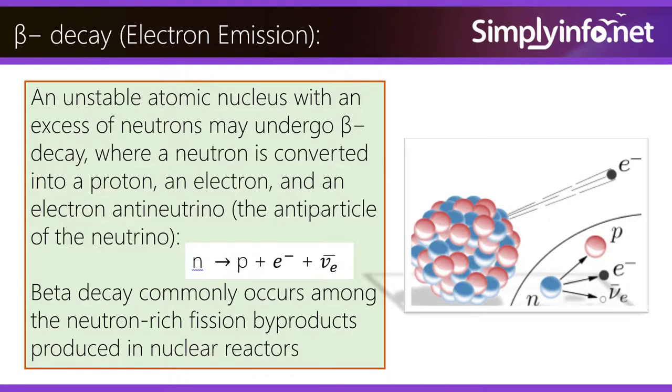An unstable atomic nucleus with an excess of neutrons may undergo beta negative decay, where a neutron is converted into a proton, an electron, and an electron antineutrino, the antiparticle of the neutrino. Beta decay commonly occurs among the neutron-rich fission byproducts produced in nuclear reactors.